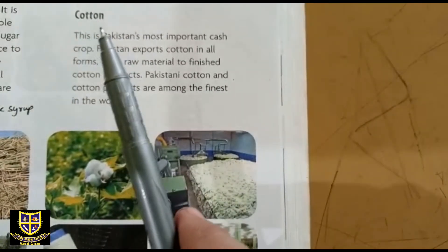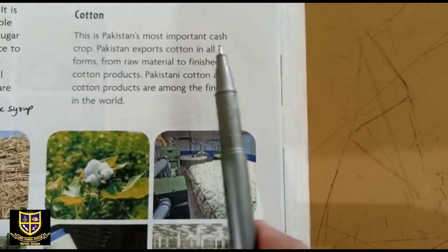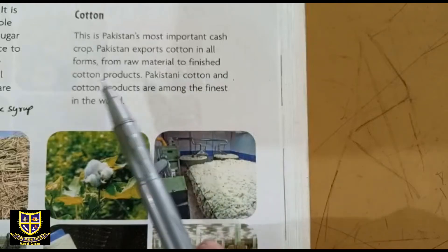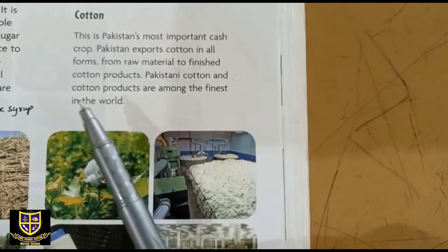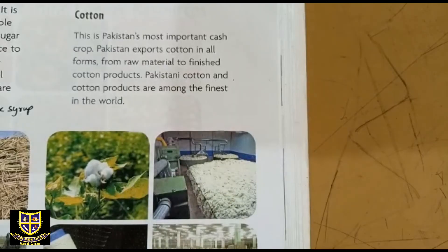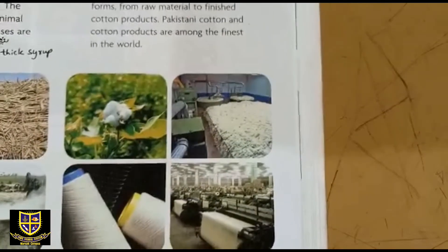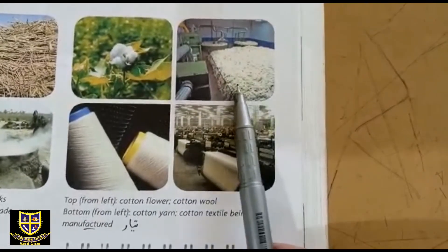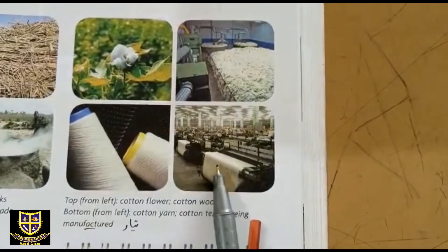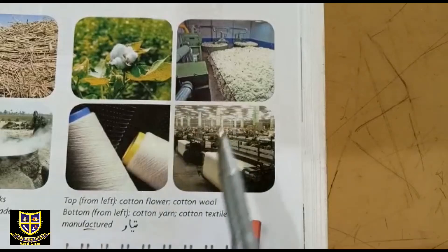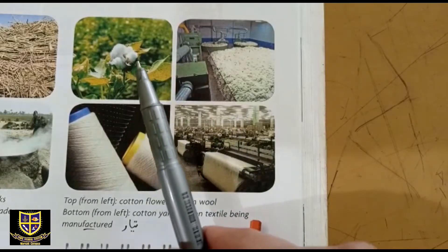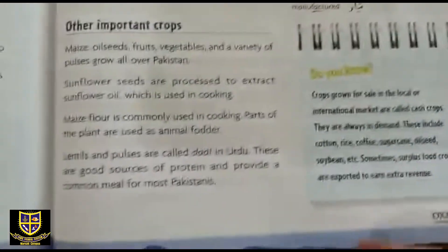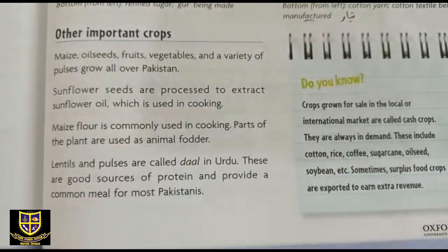Cotton — کپاس۔ This is Pakistan's most important cash crop. Pakistan exports cotton in all forms — from raw material to finished cotton products. Pakistani cotton and cotton products are among the finest in the world. کپاس کے پودے سے روئی جمع کی جاتی ہے، پھر فیکٹریز میں process کے بعد دھاگا بنتا ہے اور دھاگے سے کپڑا بنتا ہے۔ ہمارا ملک اسے raw form میں بھی export کرتا ہے اور finished material کے طور پر بھی۔